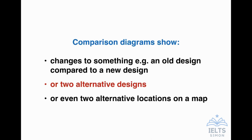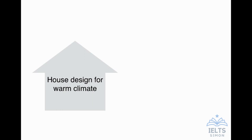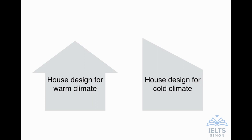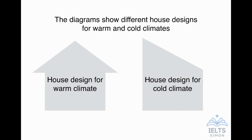Let's move on to the second type of comparison diagram: the two alternative designs. In another official IELTS book there's a good example — a house design for warm climates compared to a house design for cold climates. In the real question you see a different roof, different windows, and lots of different design features for the two types of climate. The question could look like: 'The diagrams show different house designs for warm and cold climates.' I call this an alternative designs diagram question.